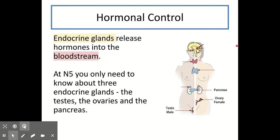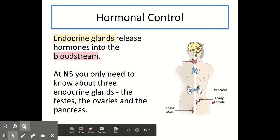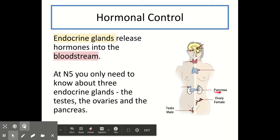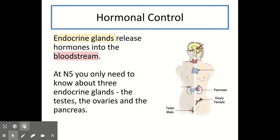At National 5, you only need to know about three endocrine glands, not all of the ones that are found in the body. You should be able to name and label in the diagram the testes, the ovaries and the pancreas. The testes and the ovaries are discussed in more detail in Unit 2, Key Area 3 on reproduction, but the pancreas is the main endocrine gland we're going to discuss today, which you can see here is the long blue leaf-like shaped organ found between the kidneys in this diagram.